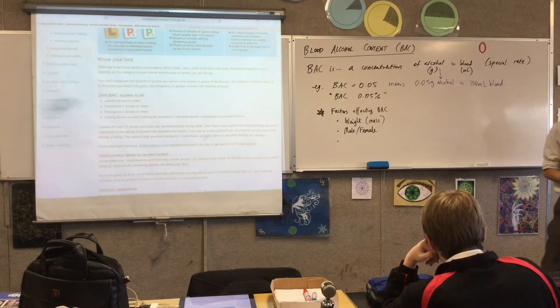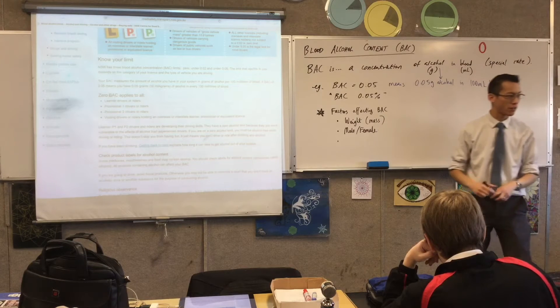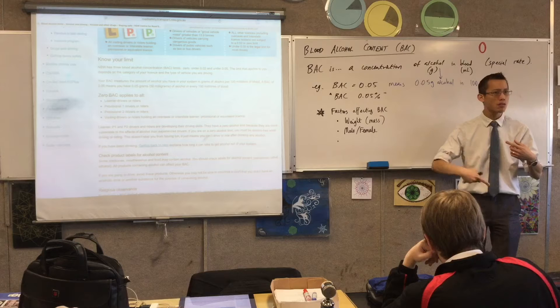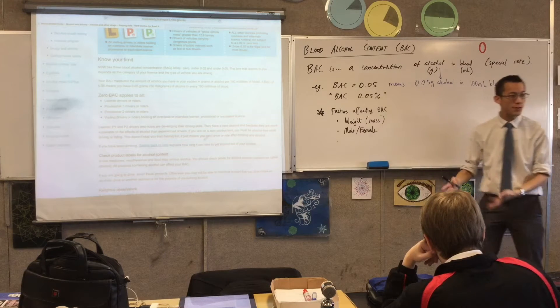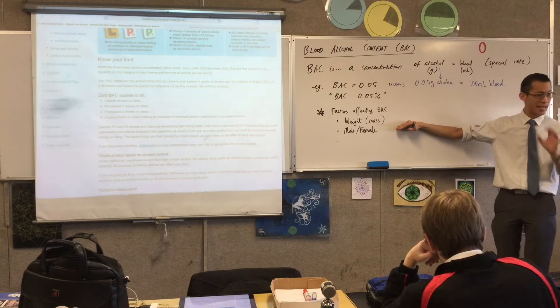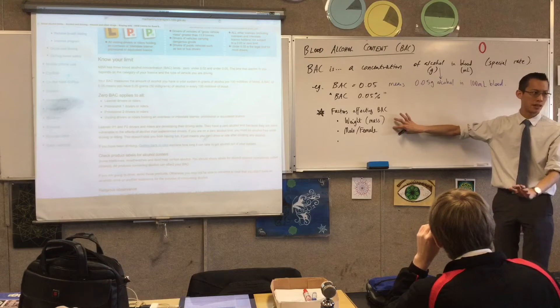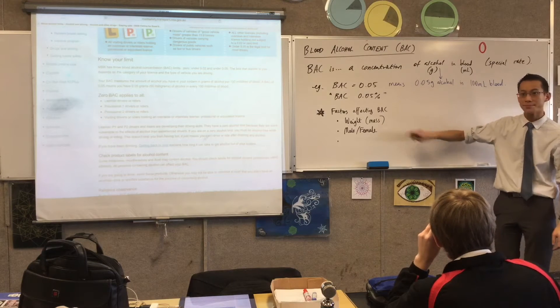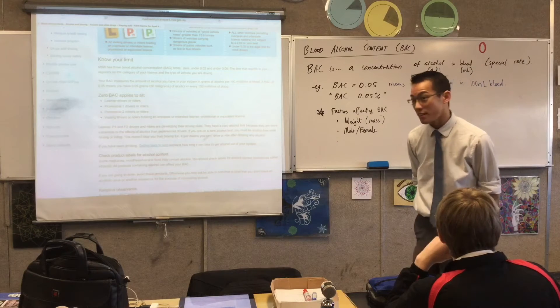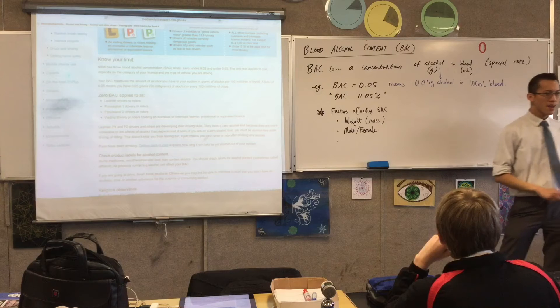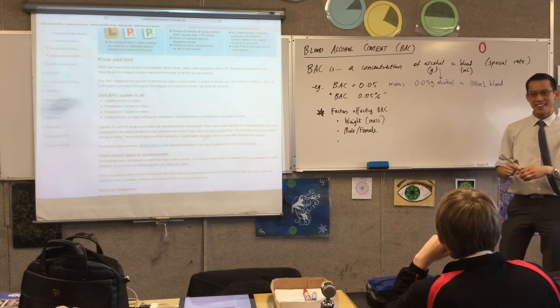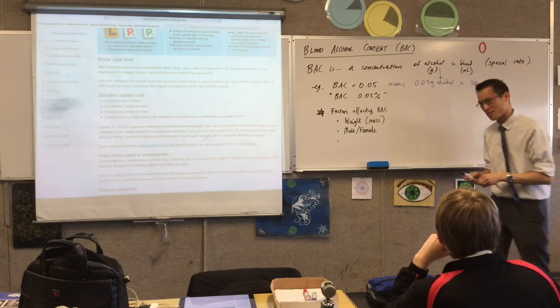So these two things are really big and we'll talk about males generally process alcohol faster, their bodies process alcohol faster. So even if you've got a male and a female who are exactly the same mass, they will process alcohol at different times. That's why all of this is estimated.